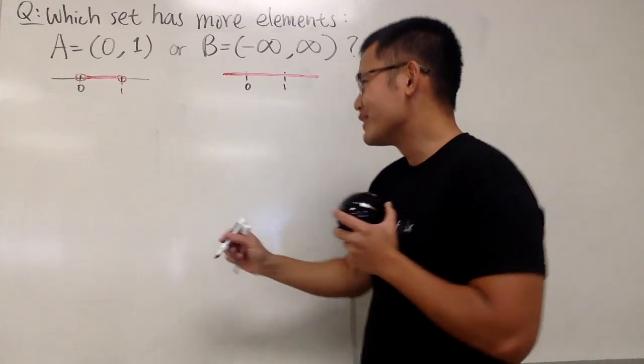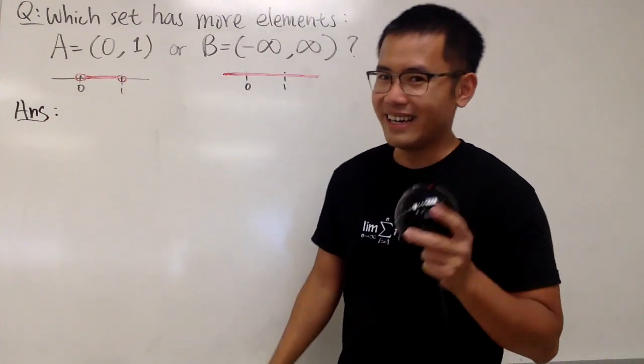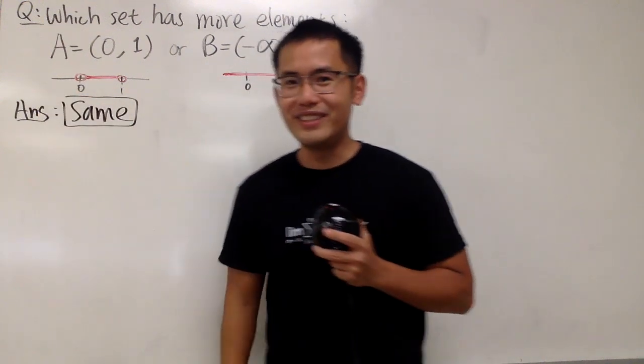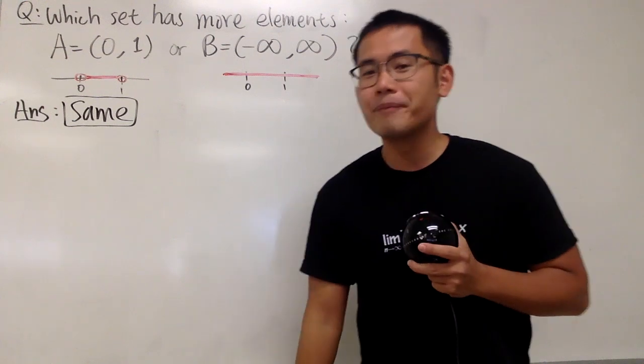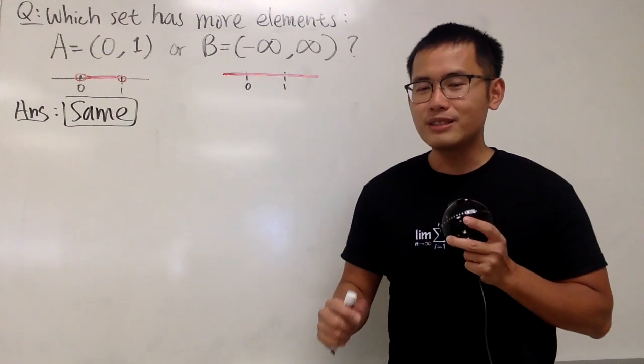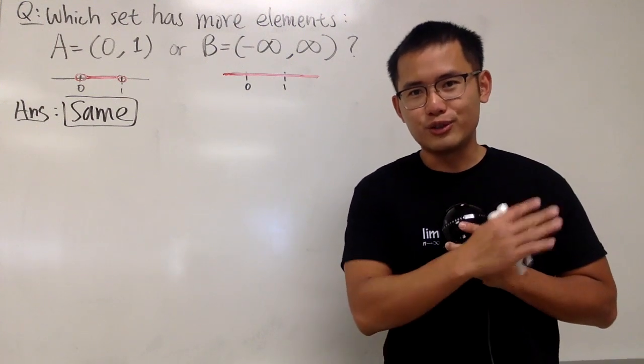No. As you guys can probably guessed it, what's the answer here? Yes, they do have the same number of elements, just like the first video that we did a few days ago. So if you haven't seen the video on why the set of all the natural numbers and the set of all the integers, they have the same number of elements, be sure you guys go check that out.